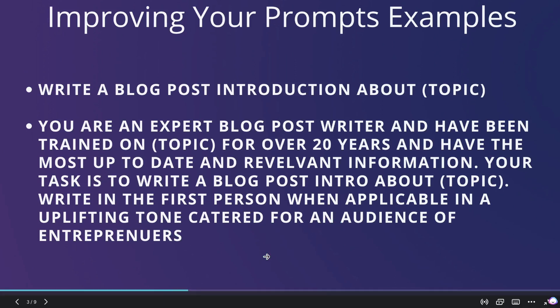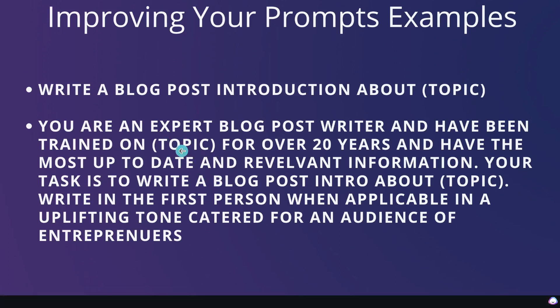In the second example, we're being much more specific, but most importantly we're also priming the AI — telling it that it's an expert blog post writer trained on this topic for over 20 years. This directs the AI into the mindset that it's an expert within this field, and that it needs to write the most important and relevant information. We're essentially training and directing the AI so we get much better outputs.